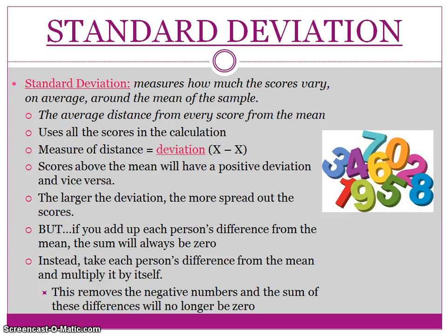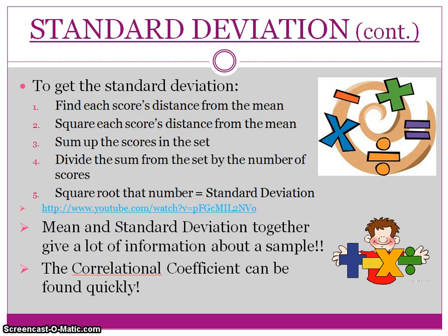The second type of measure of dispersion is standard deviation. We'll talk about this more in class. Standard deviation provides a good measure of how much the scores actually vary on average from the mean, so you need the mean to calculate it. The steps are: find each score's distance from the mean, square each score's distance from the mean, sum up the scores in the set, divide by the total, and then take the square root — and you get the standard deviation.